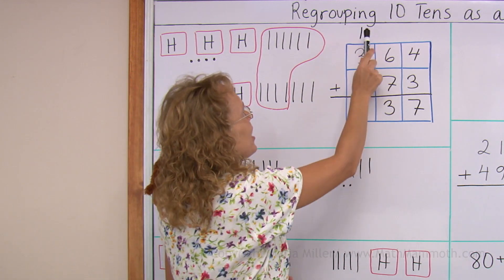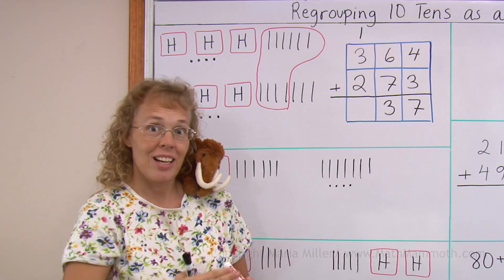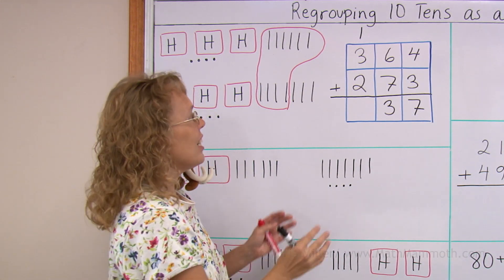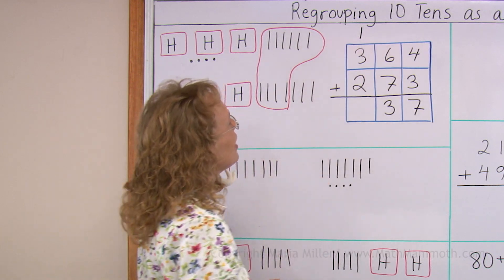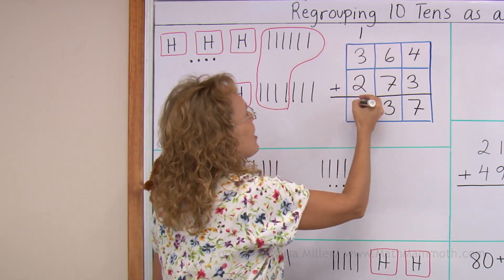So ten tens move there as one hundred. Ten tens make a hundred and are regrouped with the other hundreds. And then I add the hundreds so I get six here.